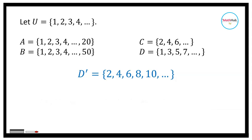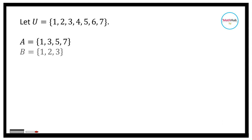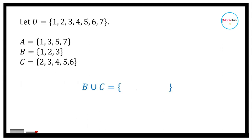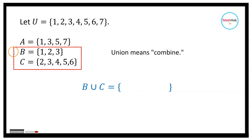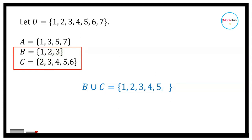For this next exercise, we have the universal set given as a specific finite set. Set A contains 1, 3, 5, 7; B and C are given sets. We want to find B union C. For B union C, you just combine all elements together. If an element appears in both sets, you only write it once. So you have 1, 2, 3, 4, 5, and 6.